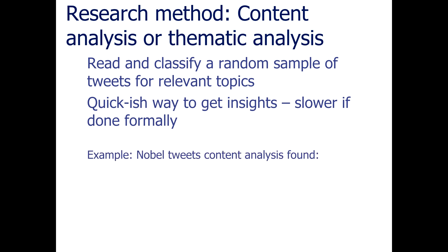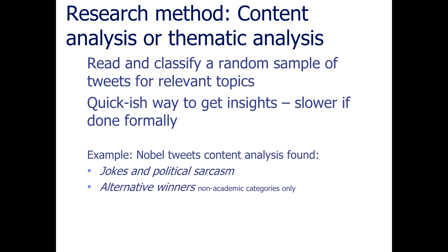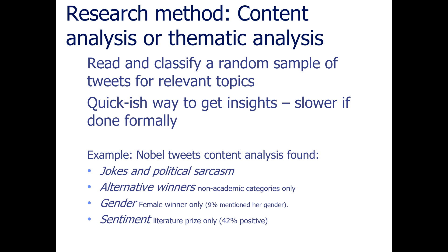Here's an example. We ran a quick project to investigate reactions to Nobel Prize announcements on Twitter using content analysis. The themes we found within tweets discussing Nobel Prizes were jokes and political sarcasm for some prizes; no suggested alternative winners for the academic categories; a gender agenda for the female winner — 9% of tweets about the only female winner in the year we analysed mentioned that she was a woman; and sentiment only occurred for the literature prize. People were very positive about the literature prize more often than about other prizes, which I think reflected greater public engagement with literature than with, for example, chemistry, physics or medicine.